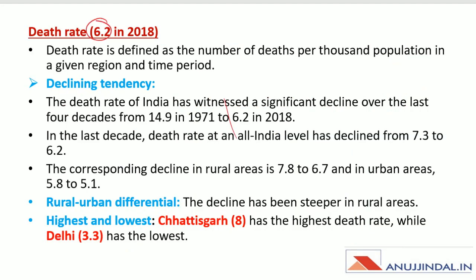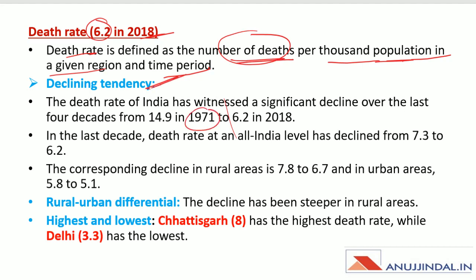Death rate is defined as the number of deaths per thousand population in a given region and time period. There is also a declining tendency: in 1971 the death rate was 14.9, while in 2018 it has decreased to 6.2. At the all-India level, death rate has declined from 7.3 in 2009 to 6.2 in 2018.